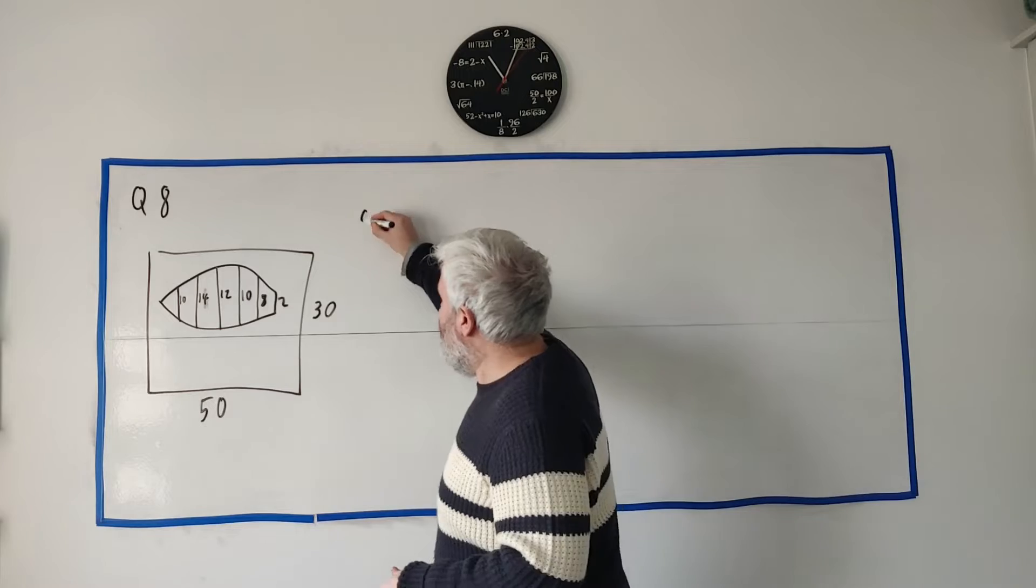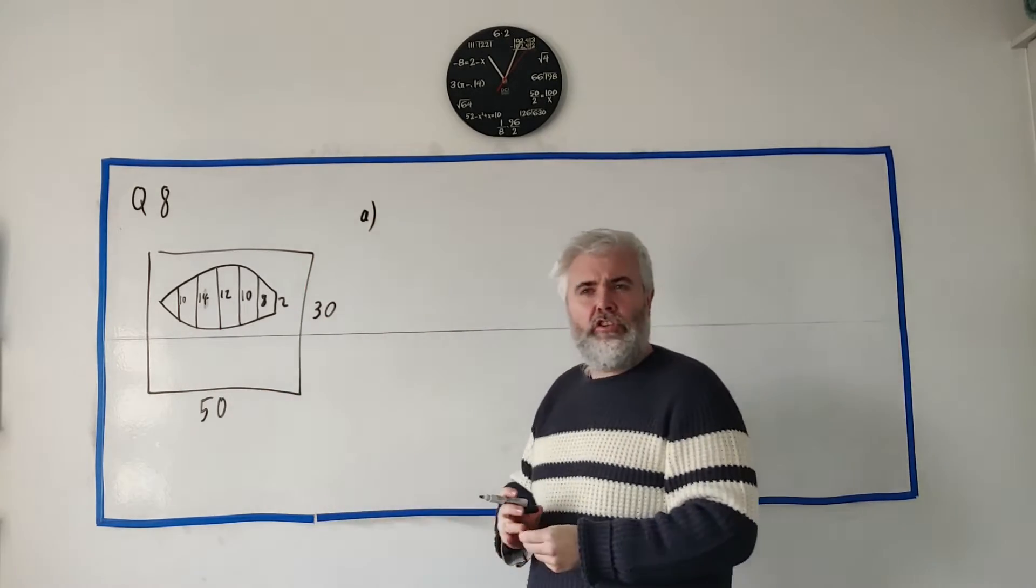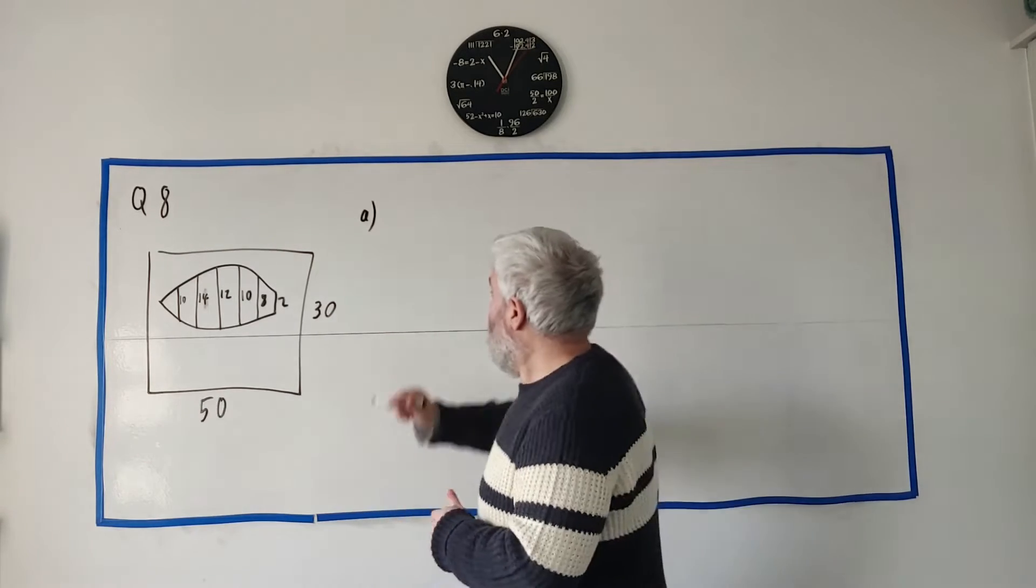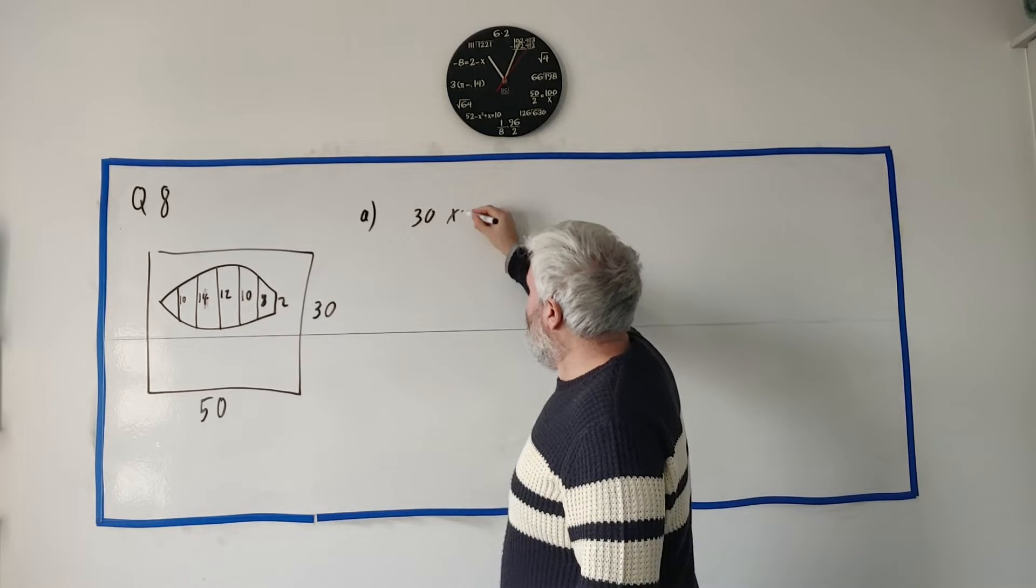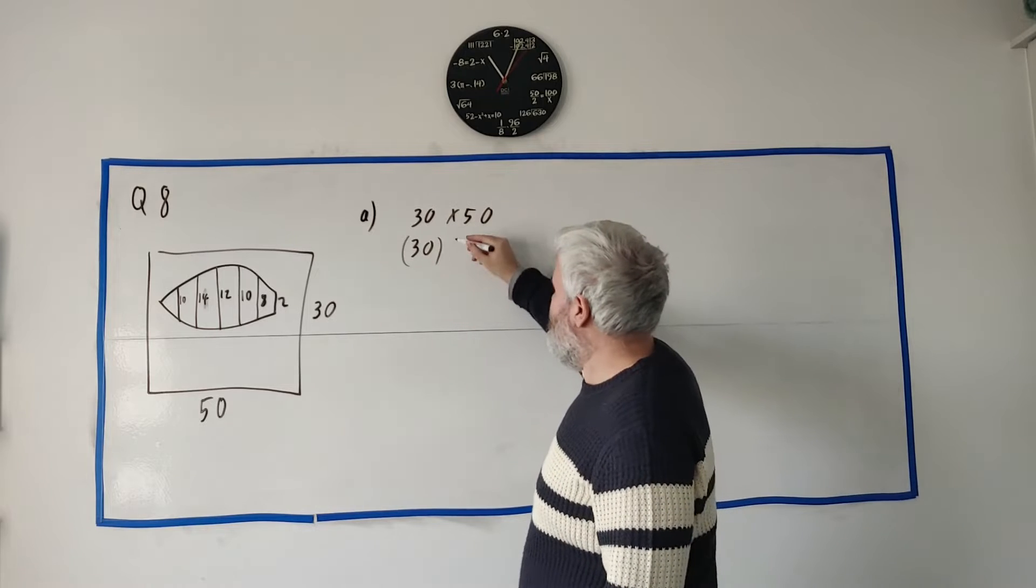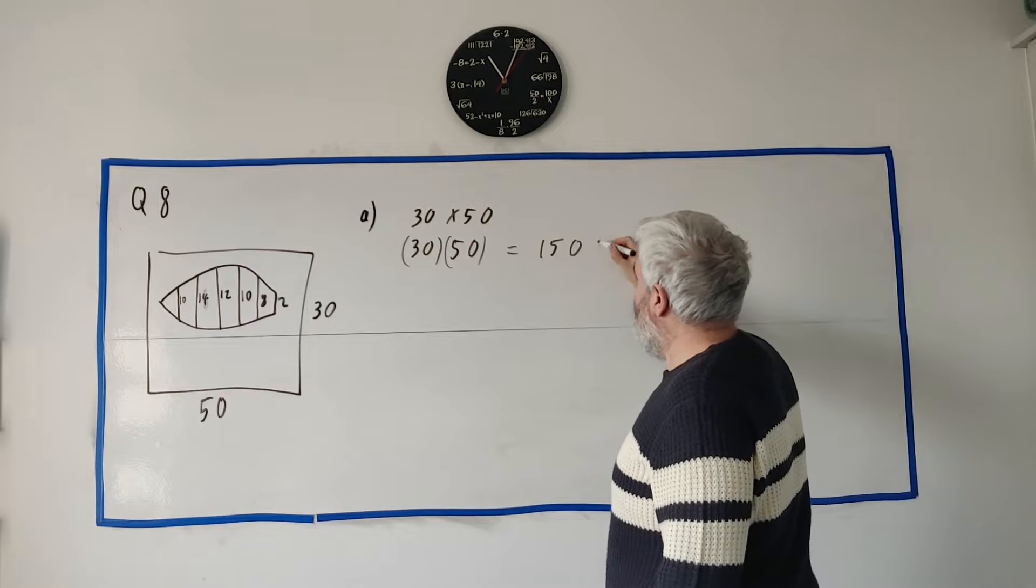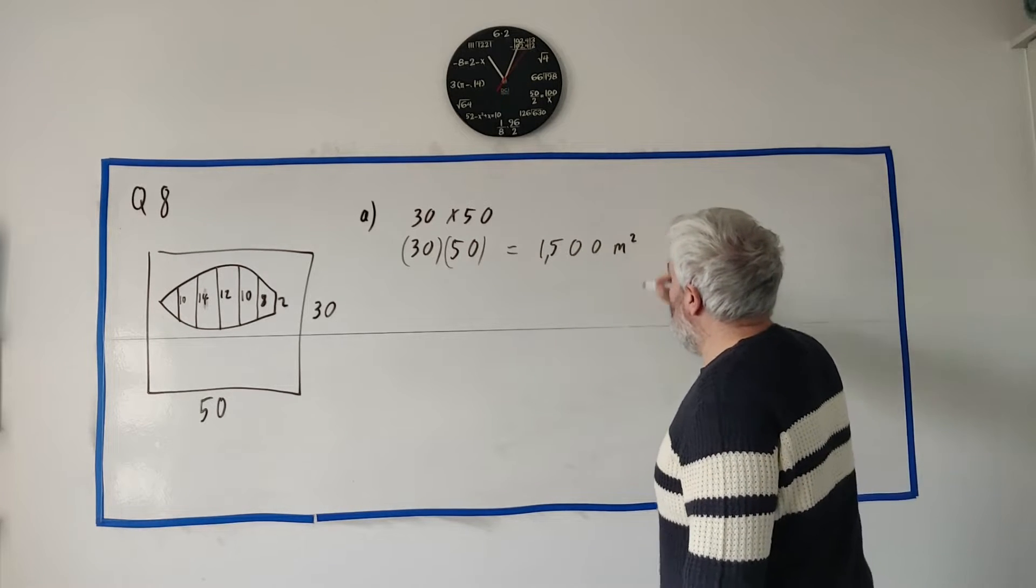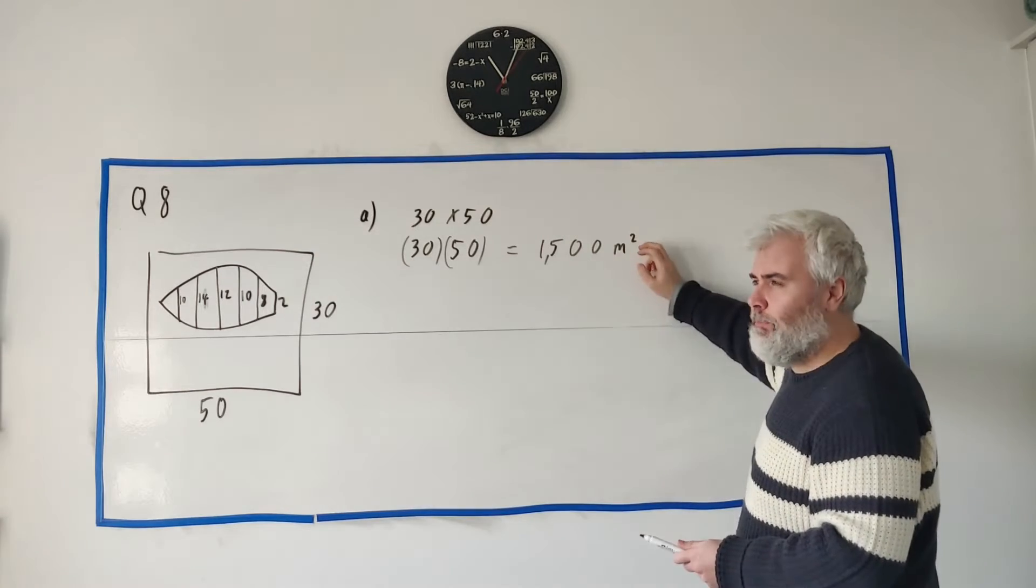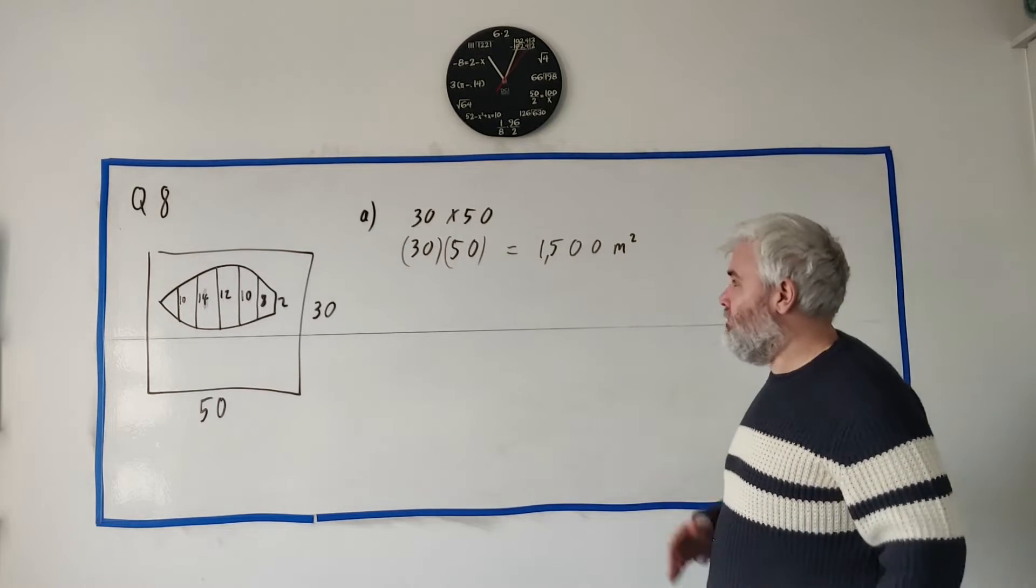To jump right in, in part A they simply asked us to find the area of this entire garden, the total area of the rectangle. So that's just 30 multiplied by 50 and that equals 1500 meters squared. In maths you won't lose any marks for leaving out the m squared, but if you're in science they ask something like this you will lose marks, so I like to put them in.